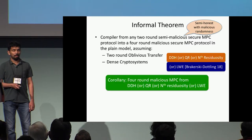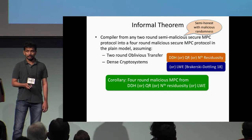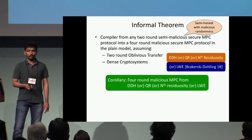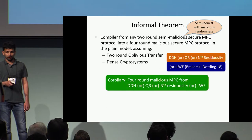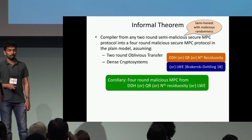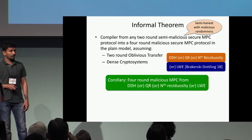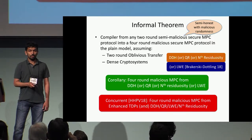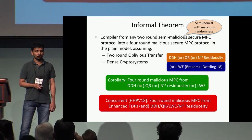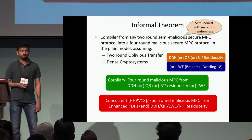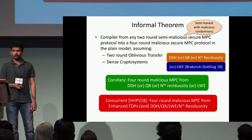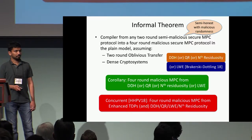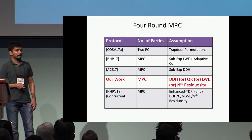By plugging in these assumptions, the corollary we get is a four-round malicious-secure MPC protocol from DDH, quadratic residuosity, nth residuosity, or LWE alone. This completes the line of work on round-optimal MPC. Concurrent to our work, Halevi et al. also achieve a four-round malicious-secure MPC from the same assumptions, but additionally requiring enhanced trapdoor permutations. You'll hear more about that from Antigone after me. Overall, we achieve round-optimal MPC from standard assumptions.